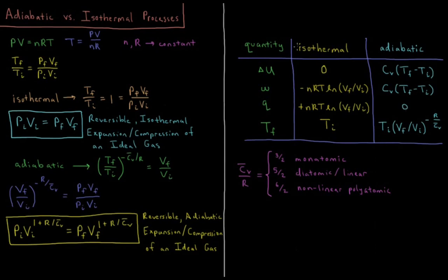For isothermal processes, the temperature doesn't change so the final temperature equals the initial temperature. Rearranging the adiabatic equations, the final temperature in adiabatic processes is the initial temperature times (VF/VI) raised to the power −R/CV̄.